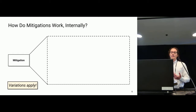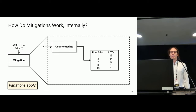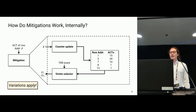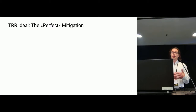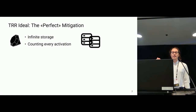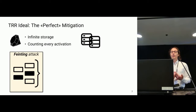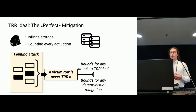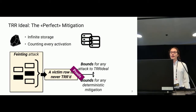How do mitigations work internally in more detail? Variations apply depending on vendors, but generally when there is an activation, the row address is used to update counters internally stored. Then, when there is time to perform a TRR event, a victim selector chooses which rows are considered to be under attack. Considering TRR ideal — the perfect mitigation with infinite storage and ability to count every single activation — with our work, we showed our novel attack called fainting, proving that even such a mitigation would still be vulnerable. A victim row will never be refreshed by TRR, giving us bounds for any attack to TRR ideal, since we proved fainting to be optimal. It also gives bounds for any deterministic mitigation, which would of course be worse than TRR ideal.